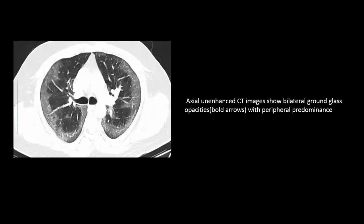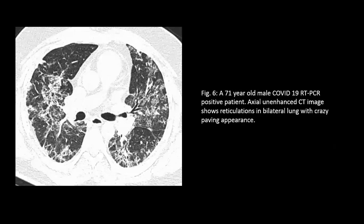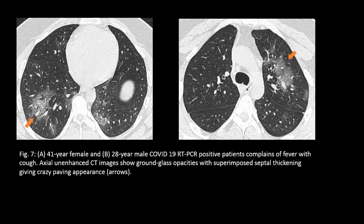In this axial CT, bilateral ground glass opacity with peripheral predominance is shown. The second finding is reticulation, seen in 71% of patients, probably due to lymphocytic infiltration of the interstitial tissue with interlobular septal involvement. Crazy paving pattern was seen in 59% of patients in our study; it consists of GGO with thickened interlobular or intralobular septa superimposed over the GGOs. An axial CT shows bilateral reticulation with crazy paving pattern, and another CT shows ground glass opacity with superimposed septal thickening giving the crazy paving pattern, as indicated by the arrows.